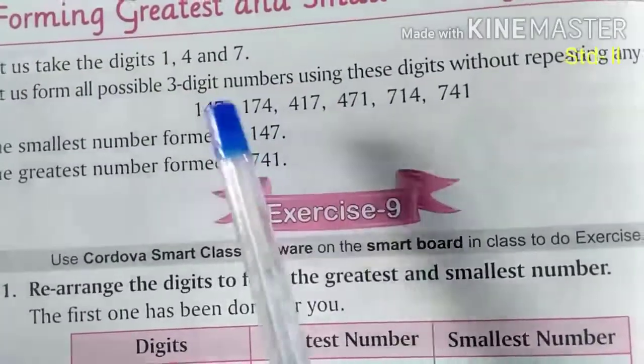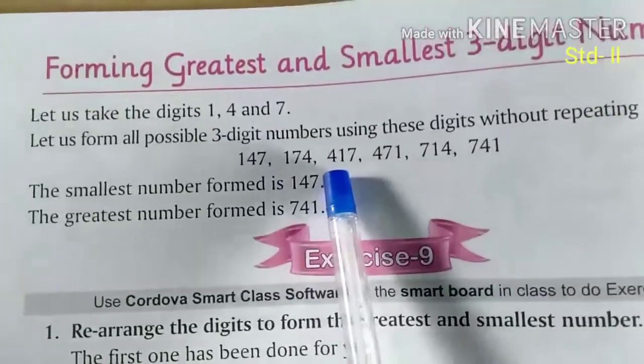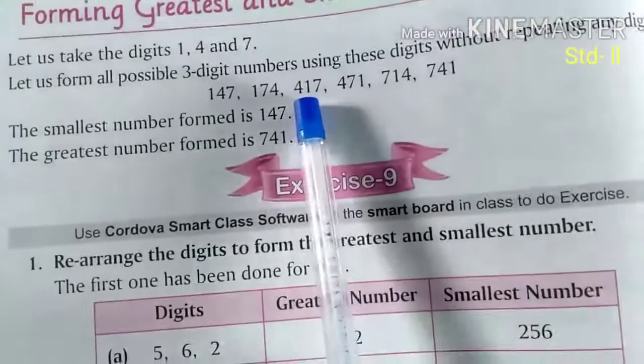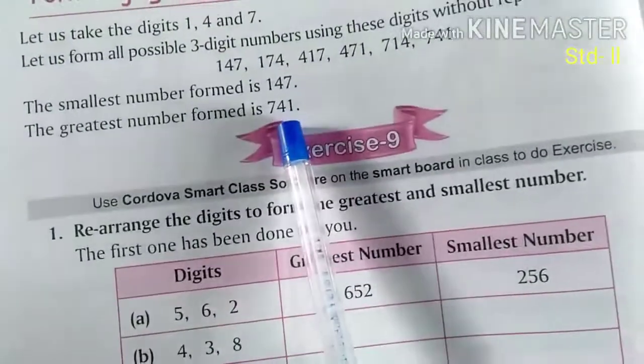the smallest number, if you are going to prepare the biggest number, then for the greatest number, the greatest number will come first. Means 7 will come in hundreds place. 741. Totally opposite. This is 147 and this is 741. So this is the smallest number and this is the greatest